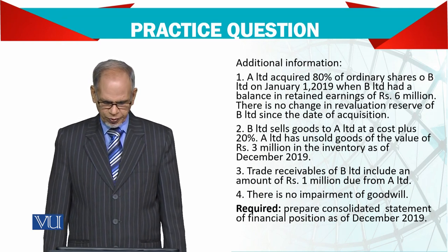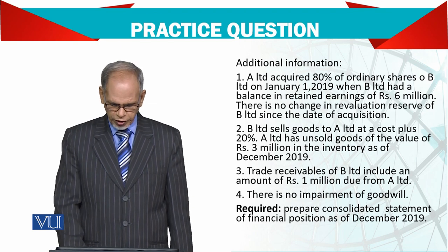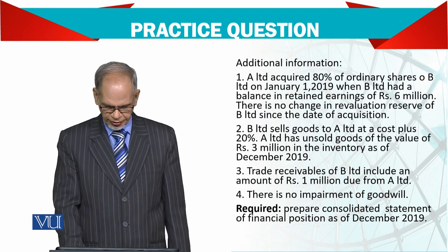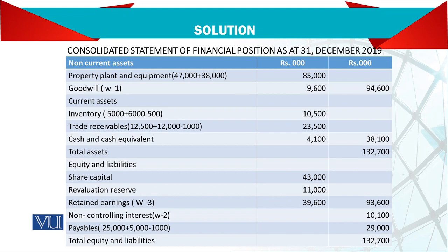Prepare the consolidated statement of financial position as on December 31st. Now we've seen the balance sheet, but the working is the important thing. For property, plant and equipment, there is no adjustment — you add both as-is. But for goodwill, we need to see the working to understand how the goodwill figure is derived.